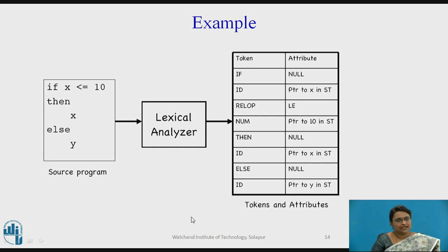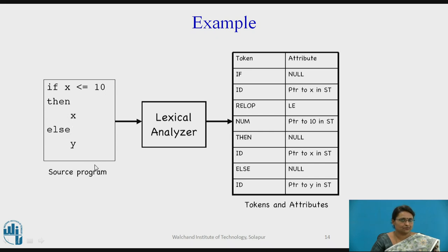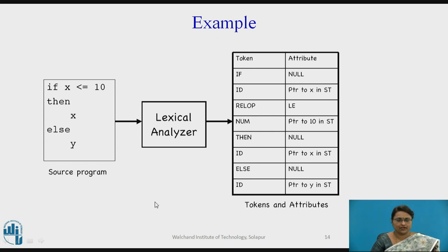Another example: analyzing a lexical analyzer with input code like 'if x <= 10 then x else y'. The token and attribute values for each element are shown in the table, with entries made accordingly.